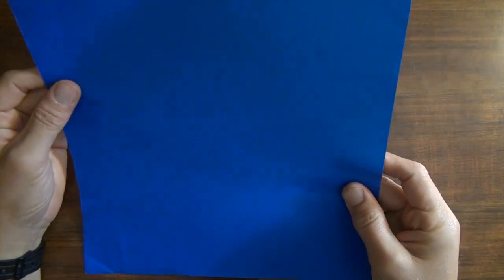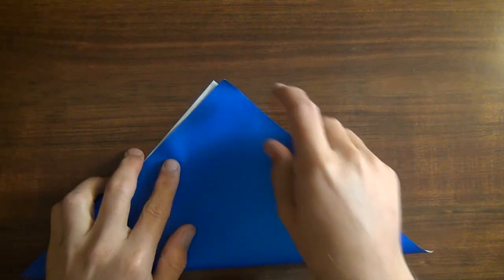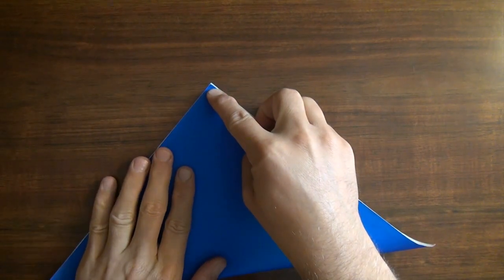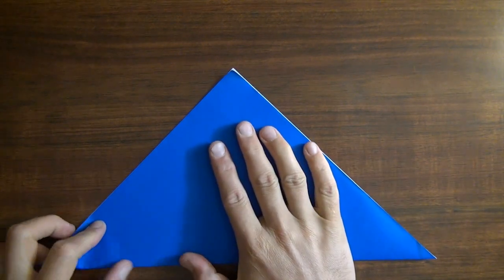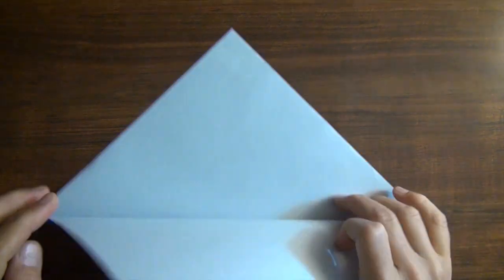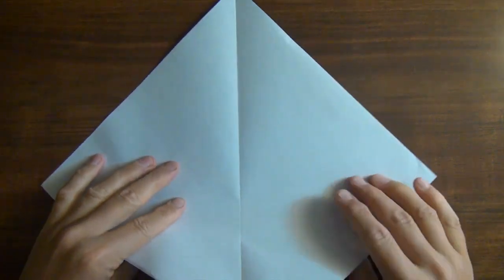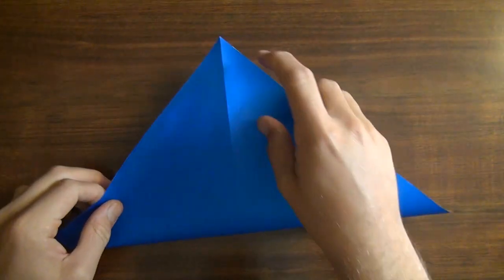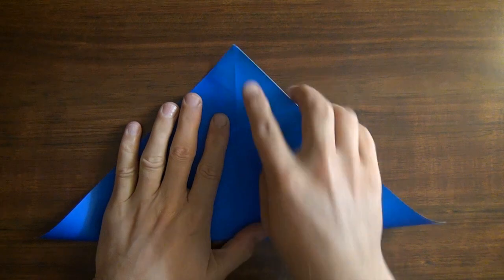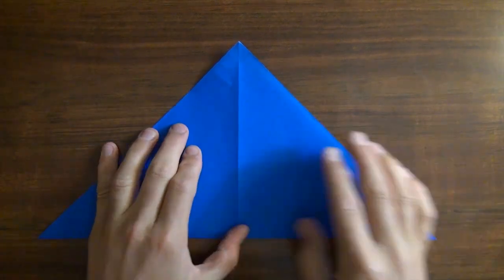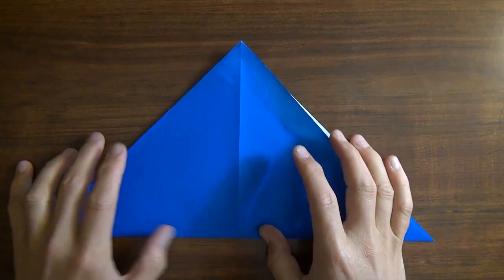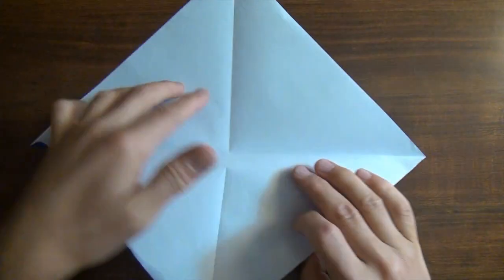Alright, so for this model I'm going to use a 10 inch square of kami, but you could certainly use a 6 inch square. Okay, let's start out by valley folding diagonally in half. And unfold.